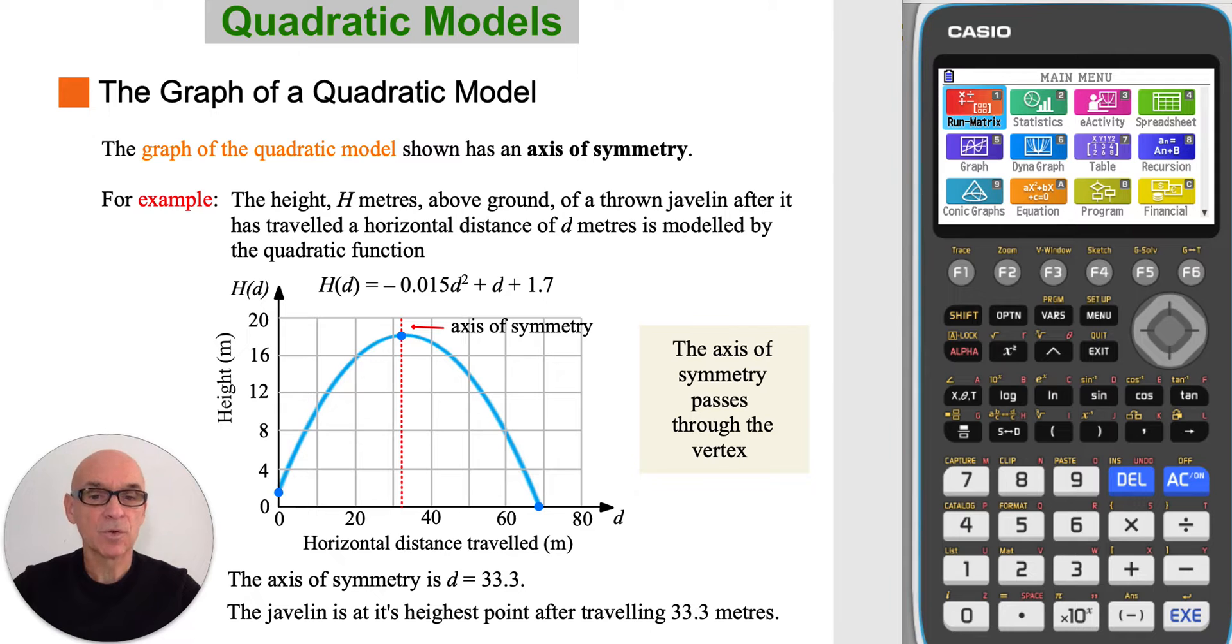The x-coordinate of the vertex also identifies the axis of symmetry, which is d equals 33.3, which can be interpreted by stating that the javelin is at its highest point after having traveled a horizontal distance of 33.3 meters.